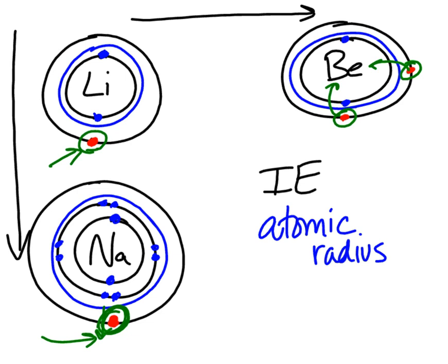With beryllium, again, there's not much shielding going on. The reason the atomic radius gets smaller as you go from left to right is because the valence electrons are closer to the nucleus due to a greater nuclear charge — a stronger nuclear attraction between the outer electrons and the nucleus.